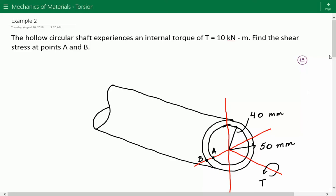Hey everybody, this is example number two for mechanics of materials covering torsion. The problem statement is the hollow circular shaft experiences an internal torque of T equals 10 kN·m and we need to find the shear stress at points A and B.